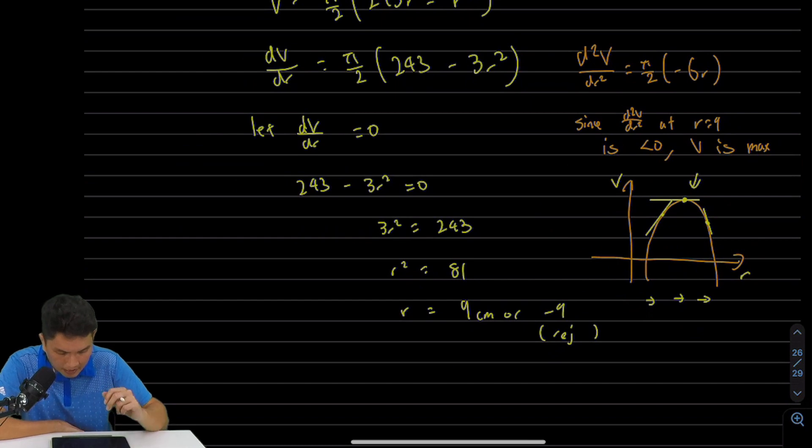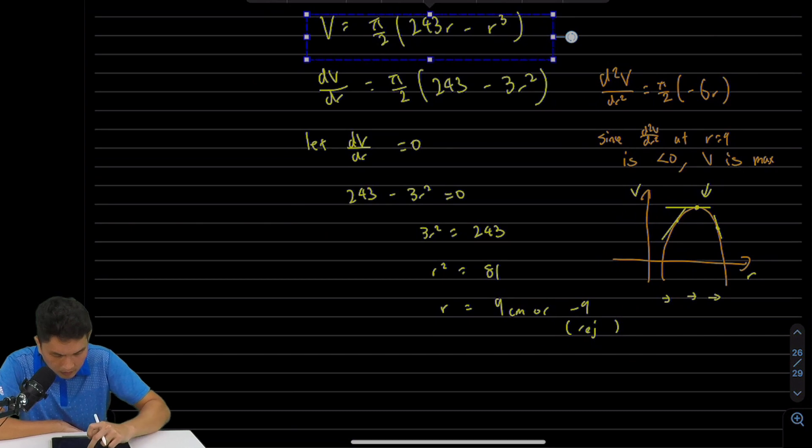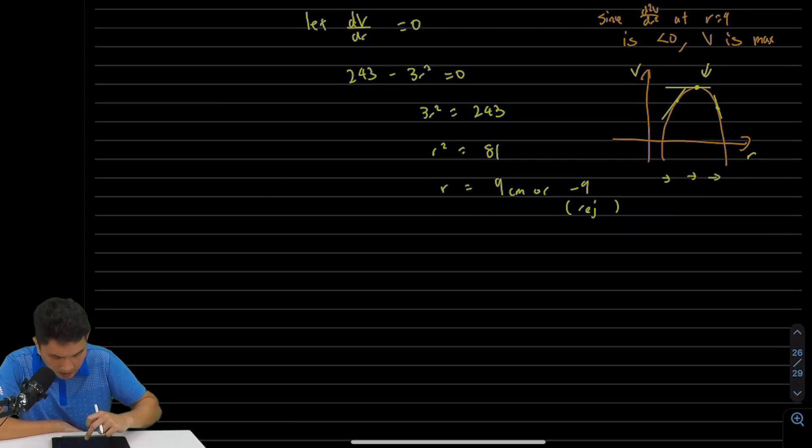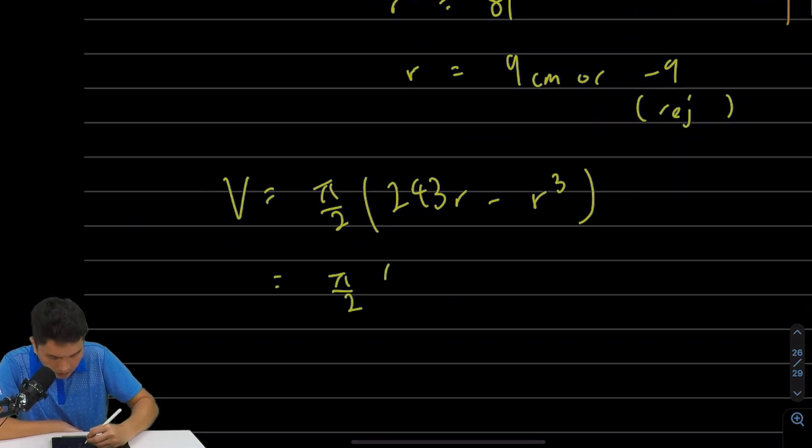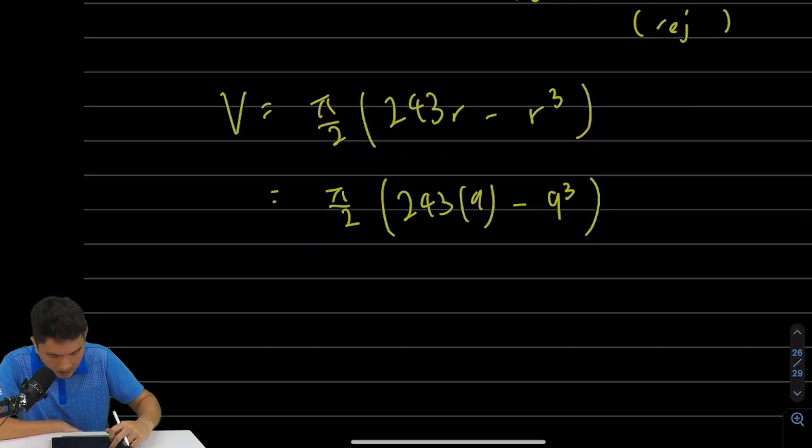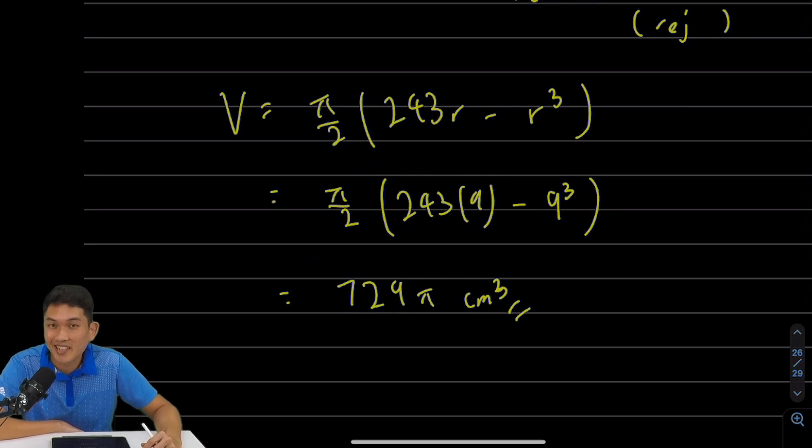So now that we've proven it's a maximum, let's find the actual volume. Let's take this over here, let's copy it and paste it down here, and substitute r equals to 9. So this is π/2 times (243 × 9 - 9³), and this will give you 729π cubic centimeters, which we know is the maximum volume. That's the answer for part 2. I hope you found this helpful, and I'll see you in the last question of this paper, question 11, kinematics.